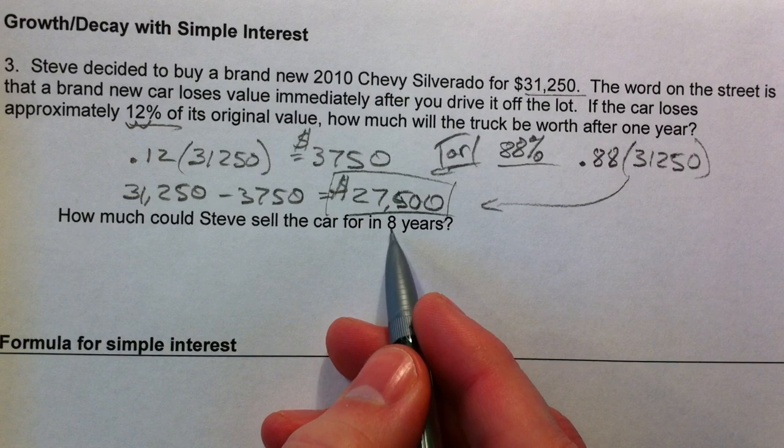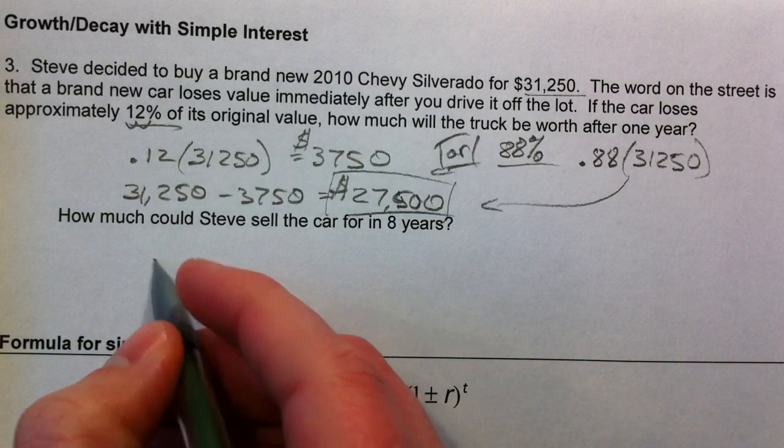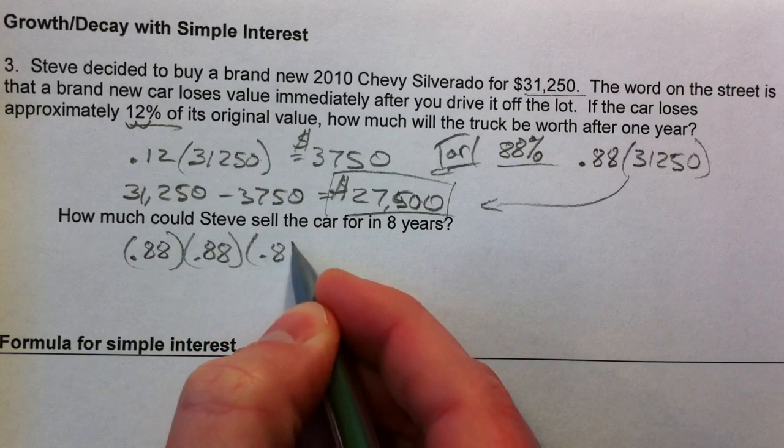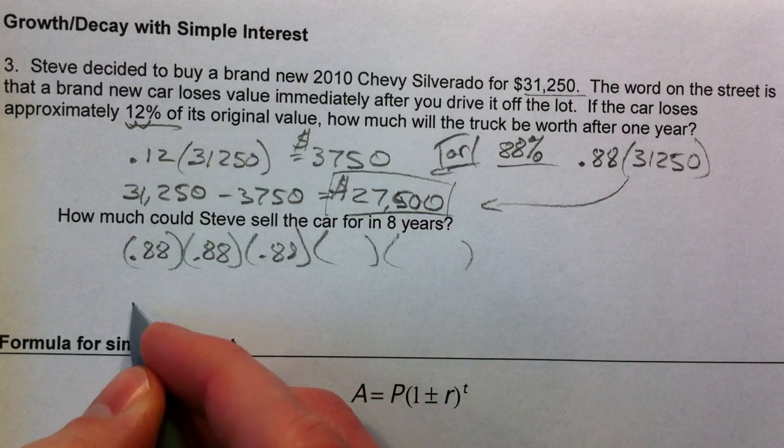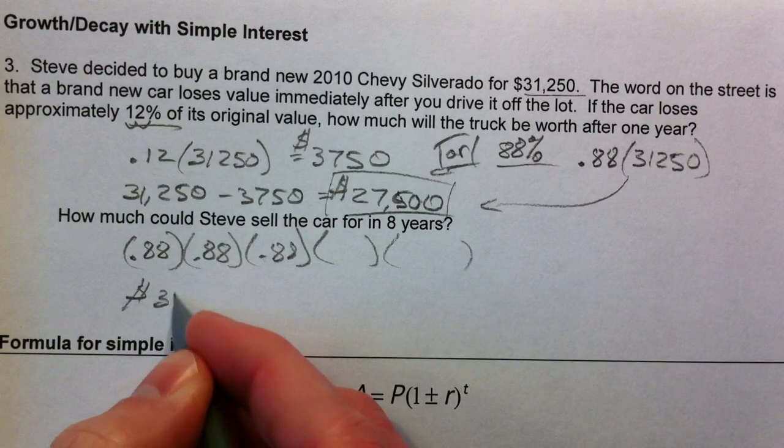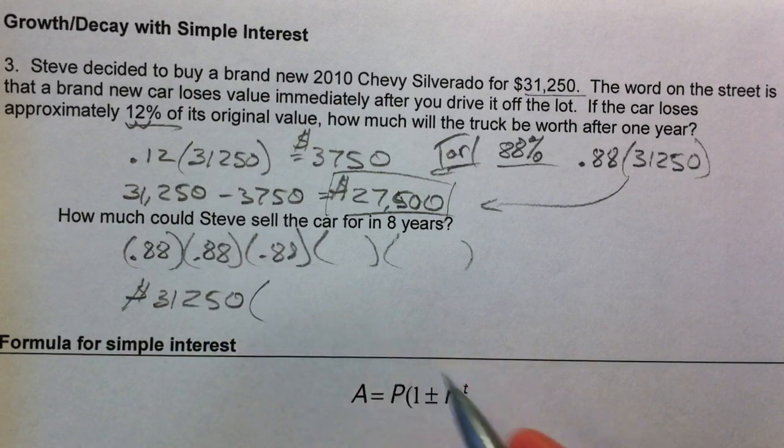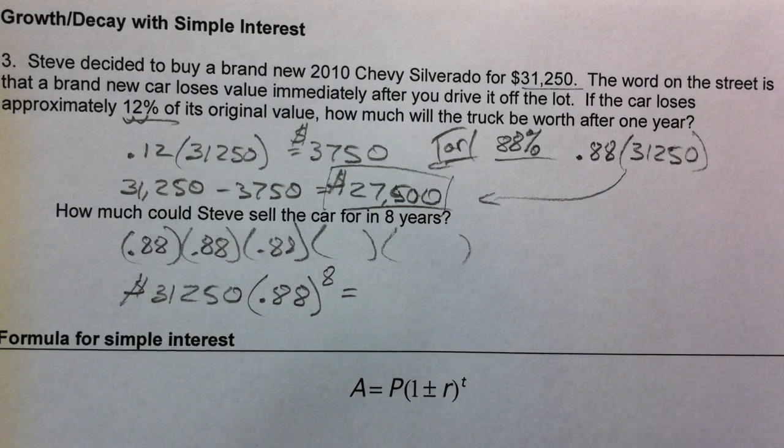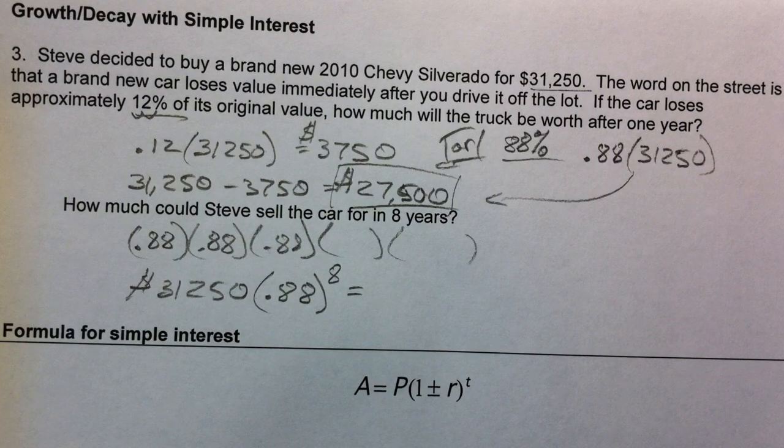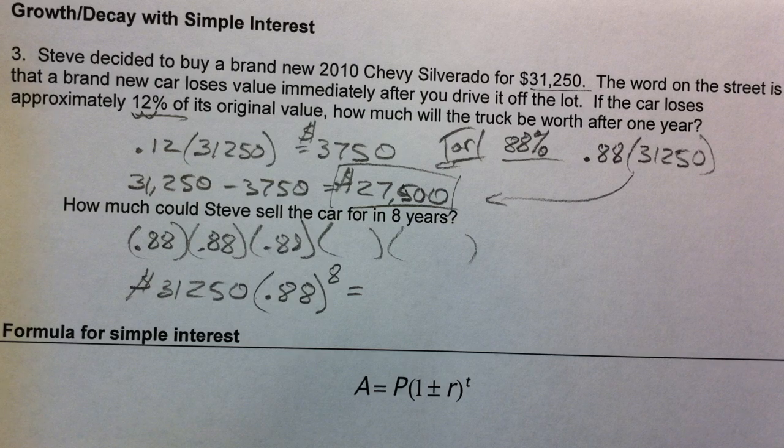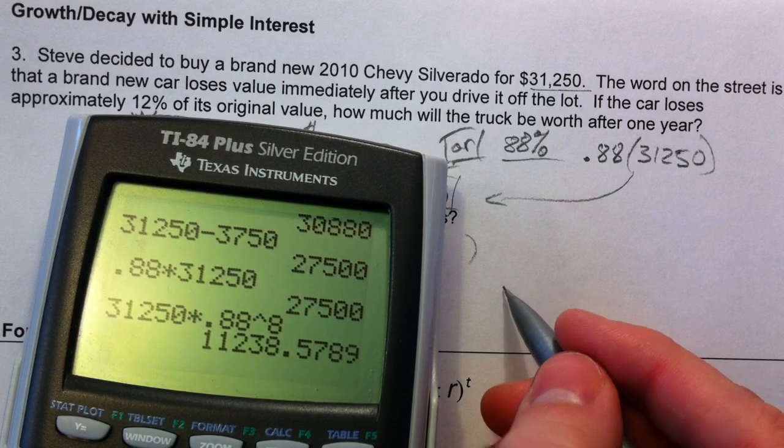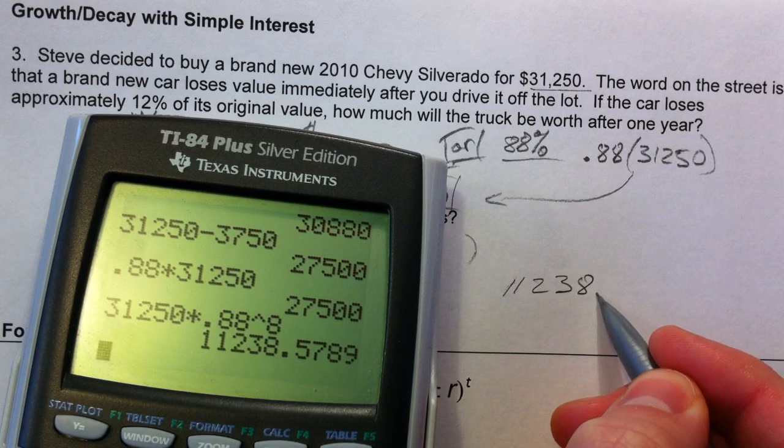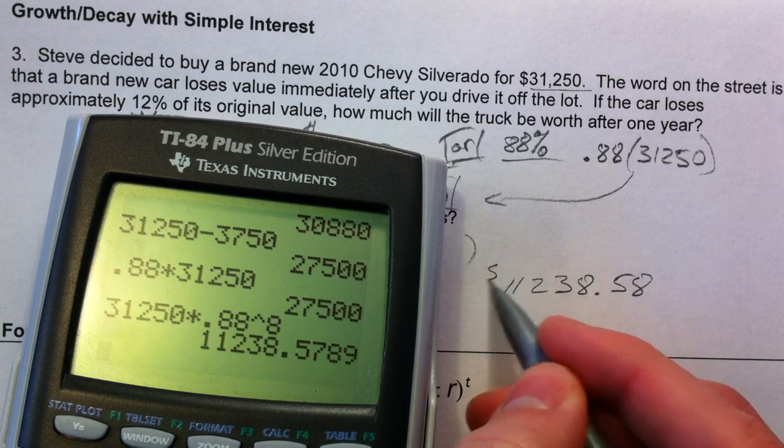So rather than multiplying by 0.88 a ton of times, right, we could just take our 31,250 and multiply it by 0.88, 8 times. So raise it to the 8th power. So 31,250 times 0.88 raised to the 8th power is what we have, and we've got a truck worth $11,238.58. Why not, we'll round up and give them a better value. So you'll find that this continues to be the same thing every single time.